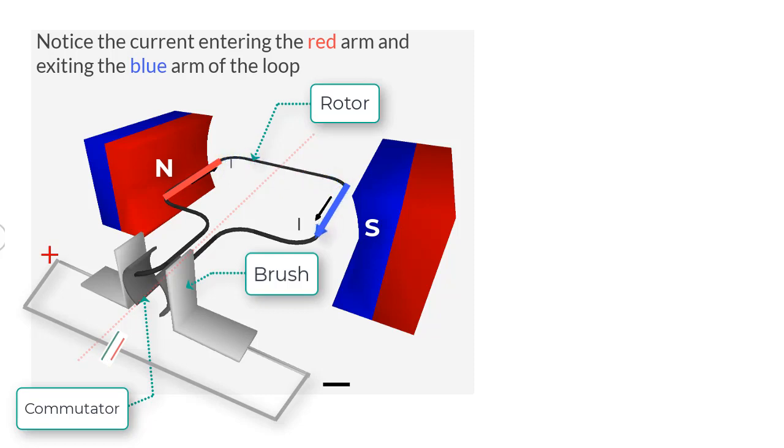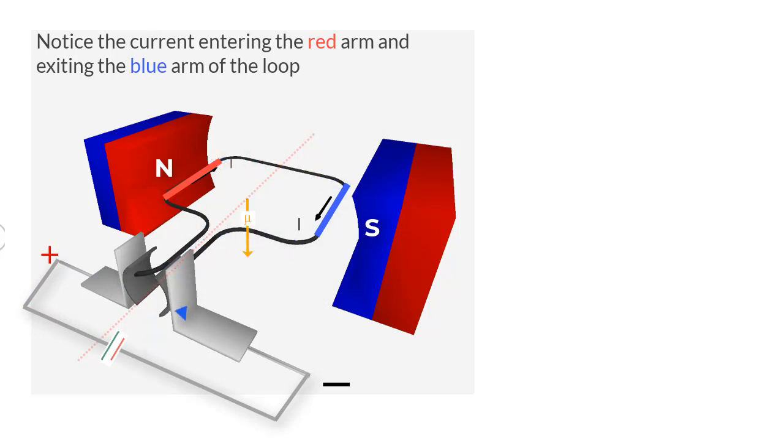In this setup, current flows through the brush to the commutator and into one side of the rotor and passes out of the other side. This rotor becomes a current loop which should have a certain magnetic moment mu due to presence of the magnetic field.